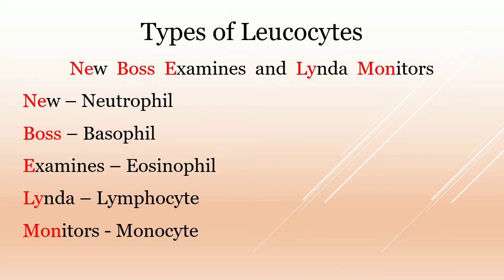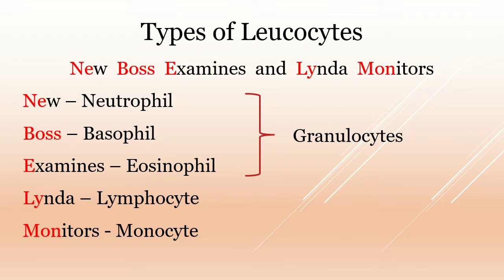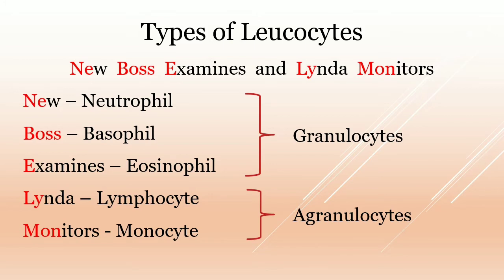Out of these five types, neutrophil, basophil, and eosinophil are categorized under granulocytes, as they contain granules in their cytoplasm. Whereas lymphocytes and monocytes are categorized under agranulocytes, as they don't contain any distinct granules in their cytoplasm.